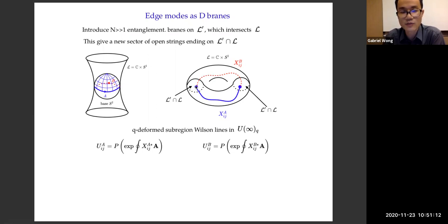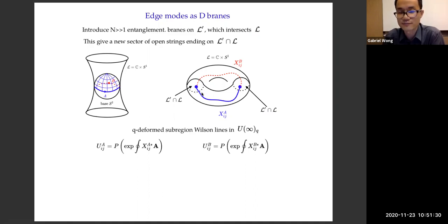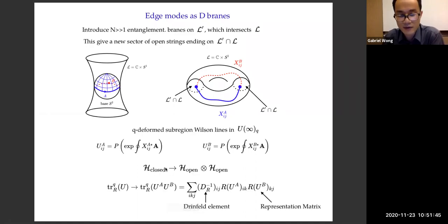When we have this closed string loop around the equator — living inside the Lagrangian — to cut it into open strings, you have to introduce a large-N number of entanglement branes on another Lagrangian L-prime that intersects this Lagrangian along what I drew as disks. The intersection of these D-branes cuts this closed string loop: part is in the A region (blue) and part in the B region (red), with associated Q-deformed Wilson lines valued in the quantum group. I define the factorization map as follows: in the closed string Hilbert space we have wave functions like trace of U in some representation R, but I promote that trace into a quantum trace — a new notion of trace. After doing that, I split the Wilson loop into two Wilson lines and write out the trace explicitly.